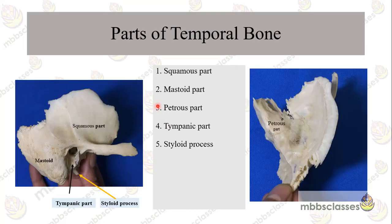Since we are talking about how to read a CT of the temporal bone, let me tell you briefly about the osteology. The temporal bone has five parts: the squamous part, the mastoid part, the tympanic ring, the elongated styloid process, and the pyramidal-shaped petrous bone.